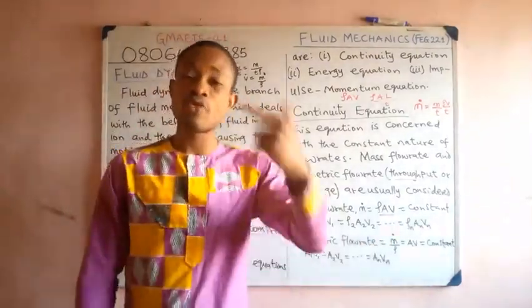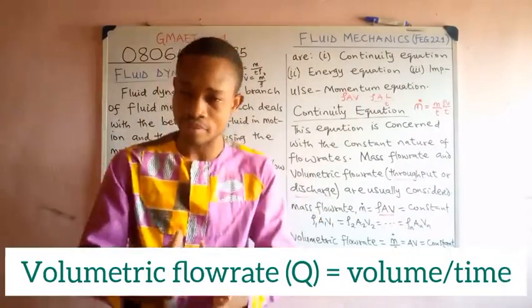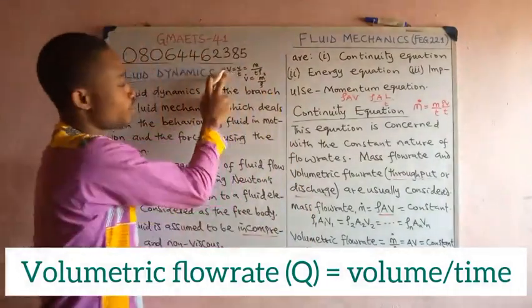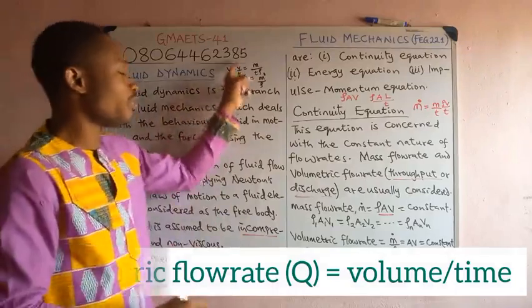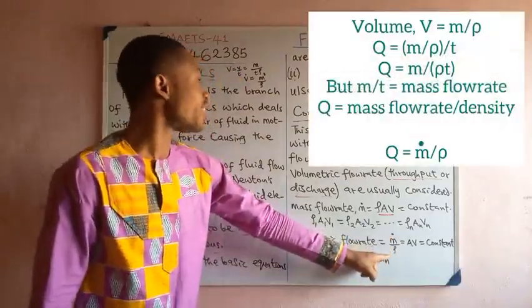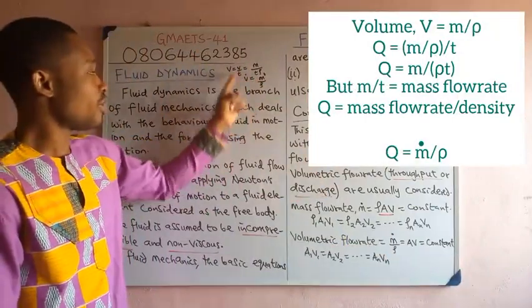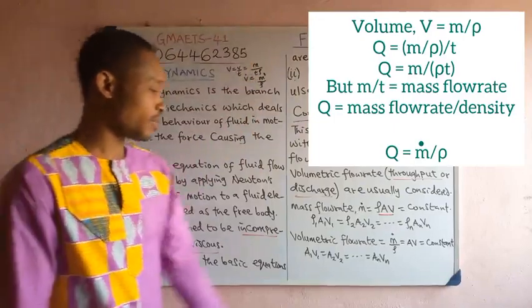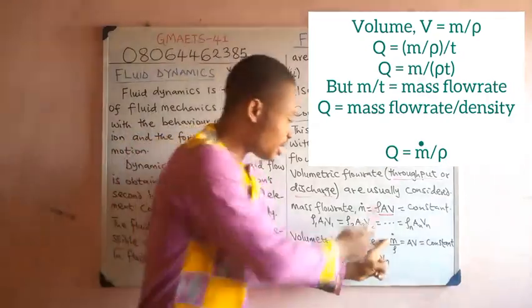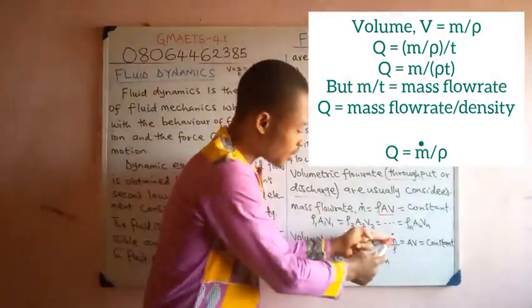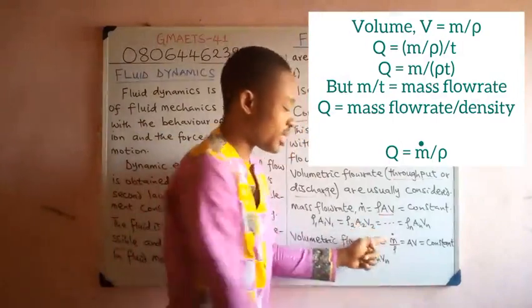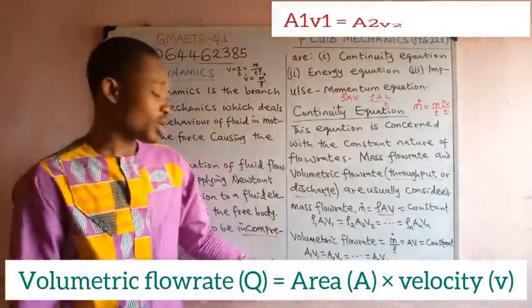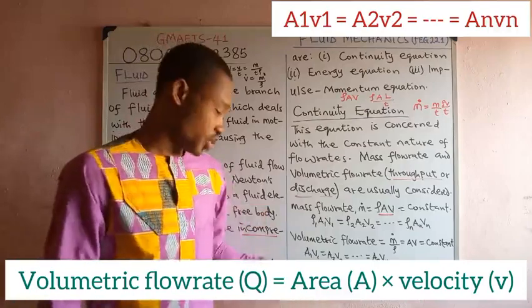Volumetric flow rate is the volume of fluid flowing through a given section per unit time, so it's volume over time. Working around this gives volumetric flow rate equal to mass flow rate divided by density. Since volume is mass over density, and mass flow rate is ρAV, the density cancels and we're left with Q = AV. Volumetric flow rate is also a constant, so A₁V₁ = A₂V₂.